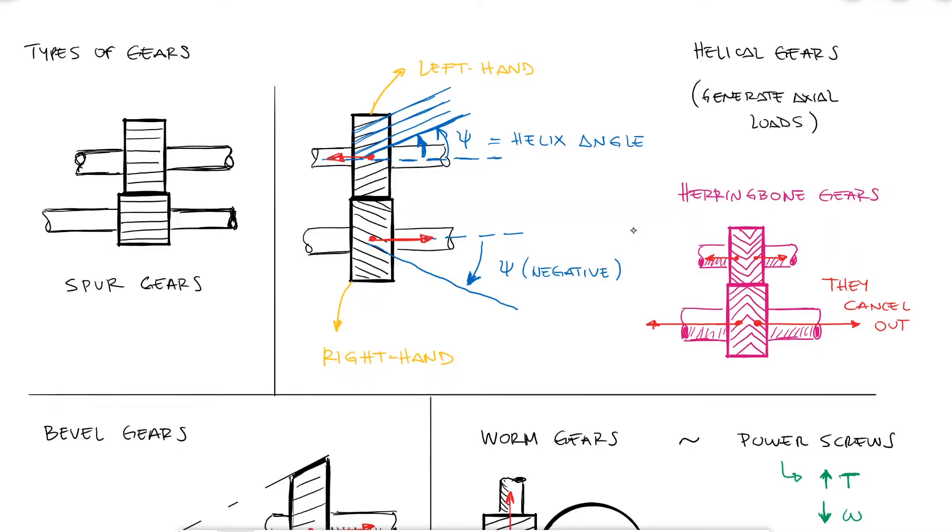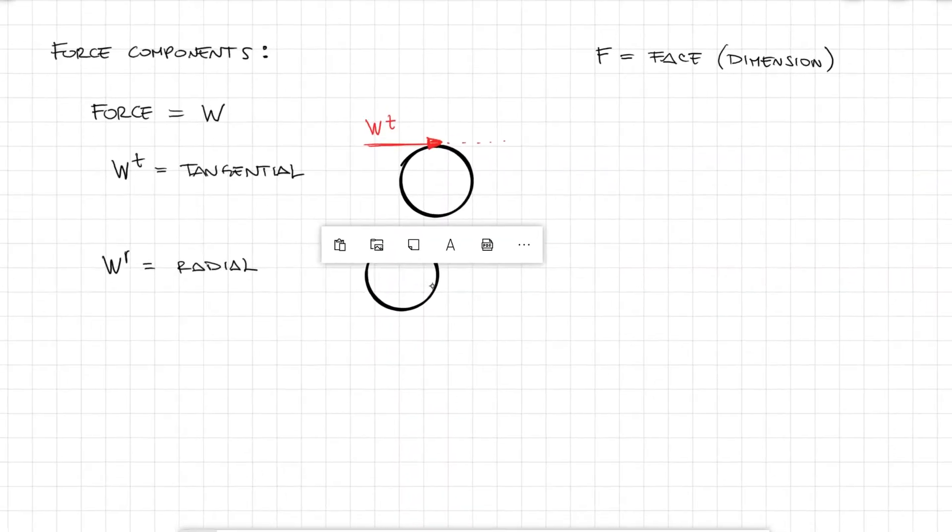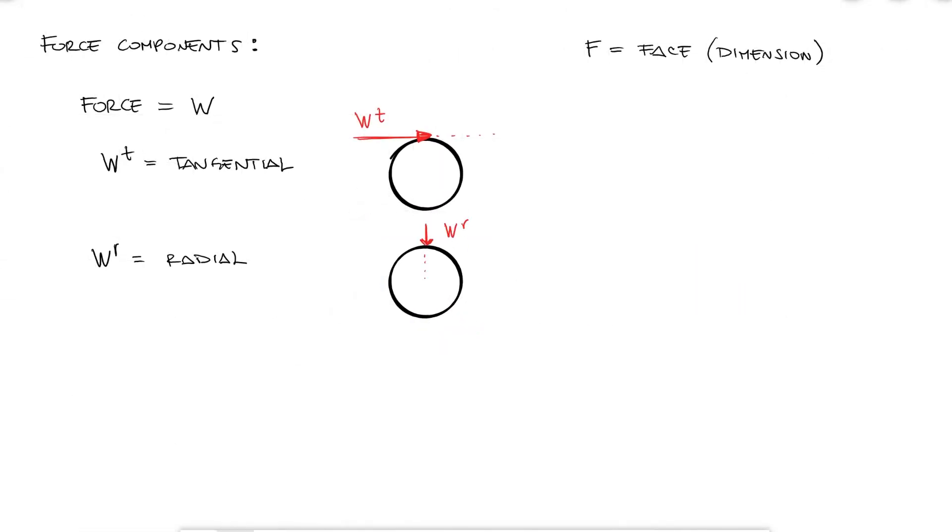Because we later use the variable capital F for the dimension of the gear that we call the phase, which will be important when we look at the stresses of the teeth and the Lewis form factor, we use capital W to refer to the forces and all of their components. Wt for the tangential force, which is the force that is tangential to the circle of the gear. Wr for the radial force, which is the force that is directed towards the center of the gear. Wa for the axial load, which is the component of the force that is parallel to the axis of the gear.